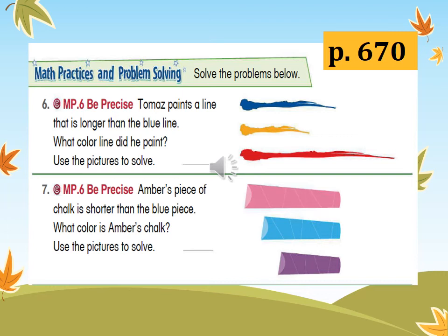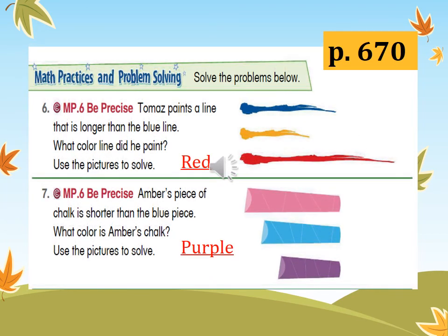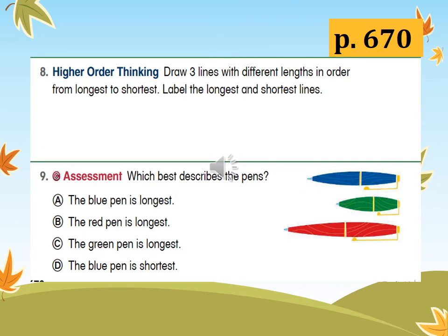Let's see if your answers are correct. For number six, the correct answer is red. Did you get it right? Number seven: the correct answer is purple. Did you get it right? Great job. Now let's do number eight — the higher order thinking. Draw three lines with different lengths in order from longest to shortest, and label the longest and shortest lines.